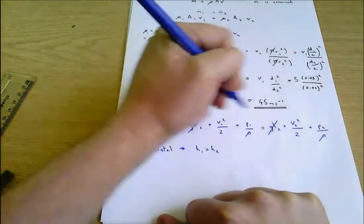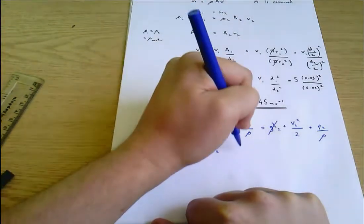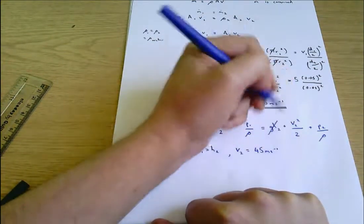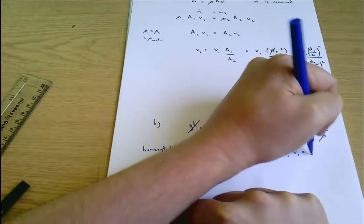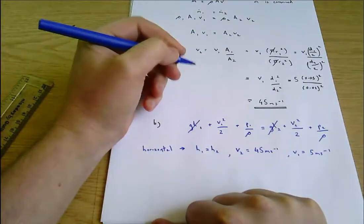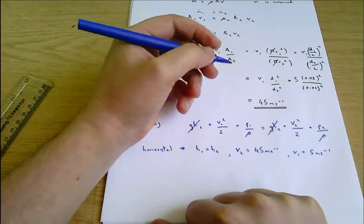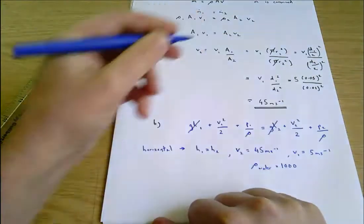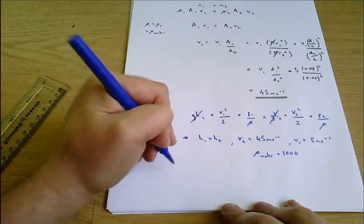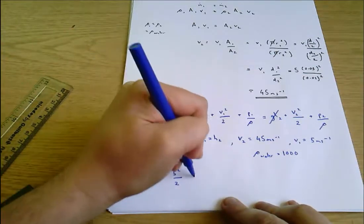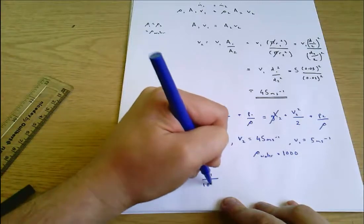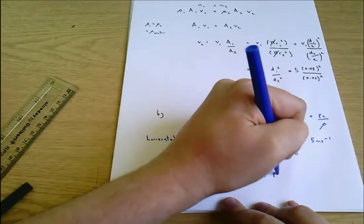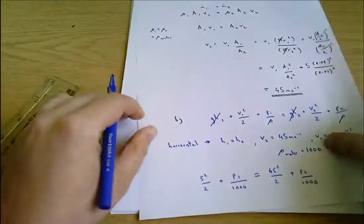And we know it's the hose from part A. So V2 equals 45 meters per second and V1 equals 5 meters per second. And ρ for water we're told equals 1000. So that gives us 5 squared on 2 plus P1 on 1000 equals 45 squared on 2 plus P2 on 1000. I'll move on to a new sheet.